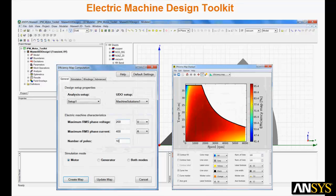ANSYS has created an electric machine design toolkit to address the challenges. Automated scripting built directly in the Maxwell interface allows you to set up efficiency map calculations and compute torque speed curves and efficiency maps automatically.